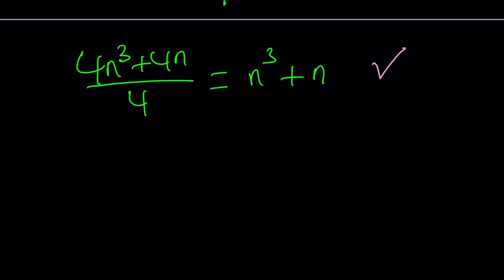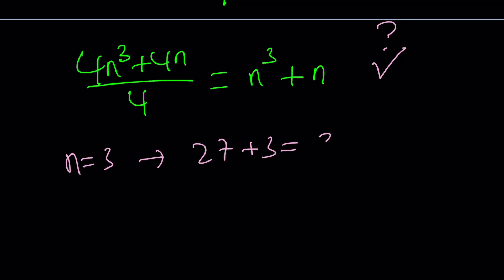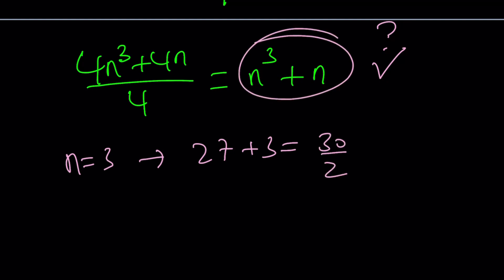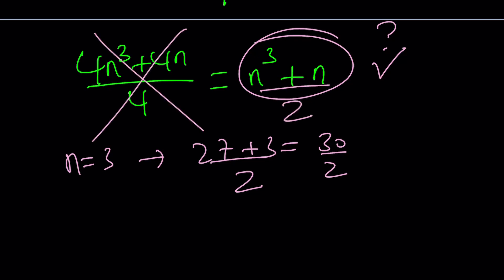This brings us to the end. Thank you for watching — please comment, like, and subscribe. One quick check: for n = 3, the formula n³+n gives 27+3 = 30, but the actual answer should be 15, so we need to divide by 2. The correct answer is (n³+n)/2. That also matches the Gauss method result. Bye!